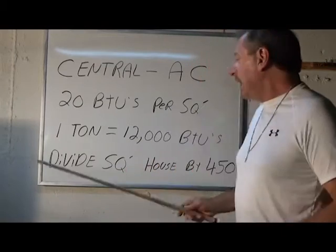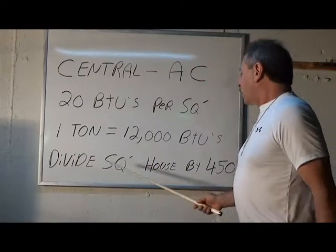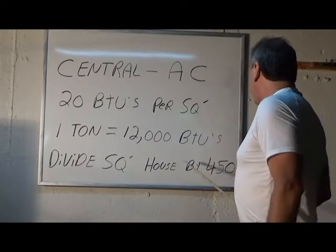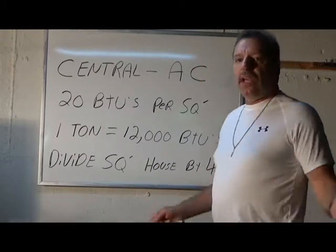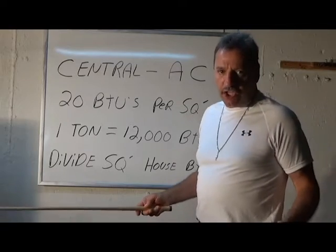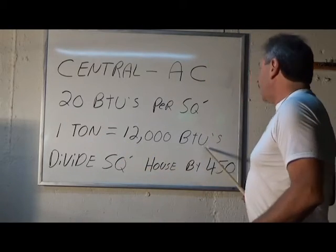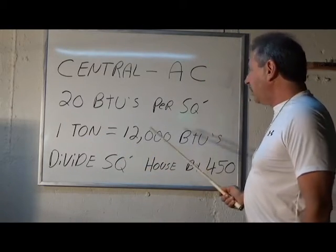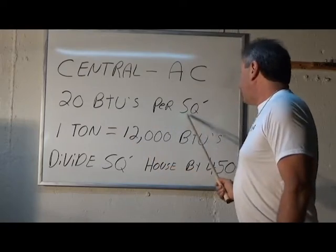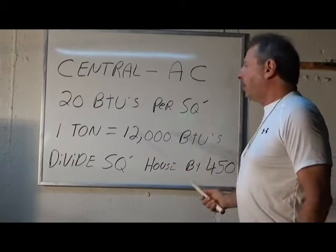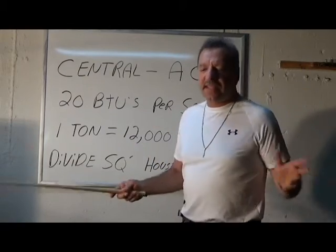Any square footage of the house divided by 450 will give you the tonnage. 1 ton equals 12,000 BTUs. You need 20 BTUs per square foot. That's the rule of thumb.